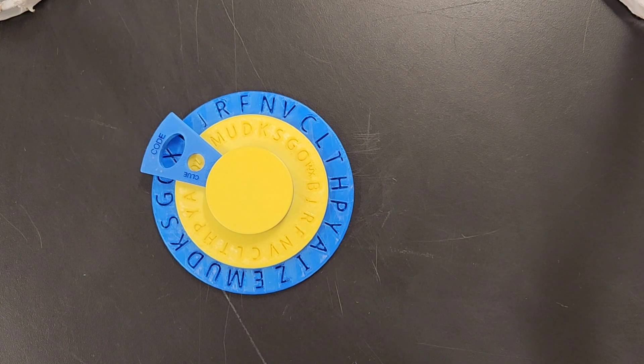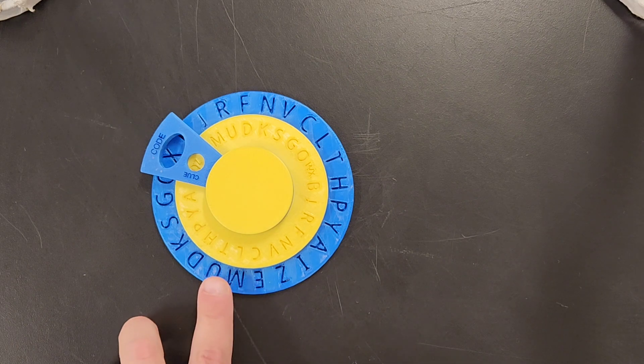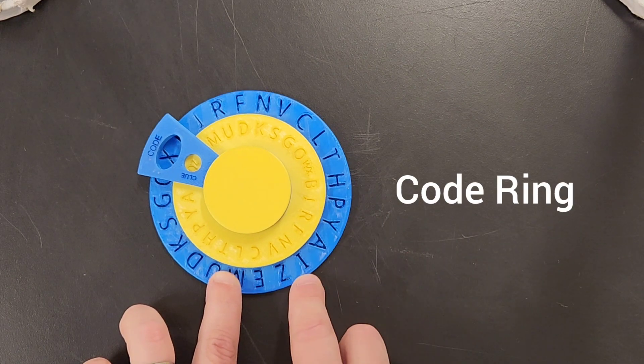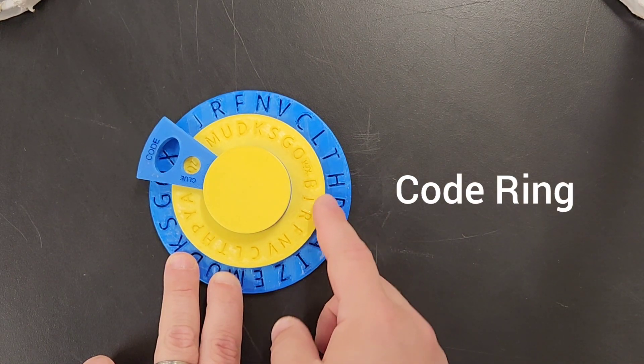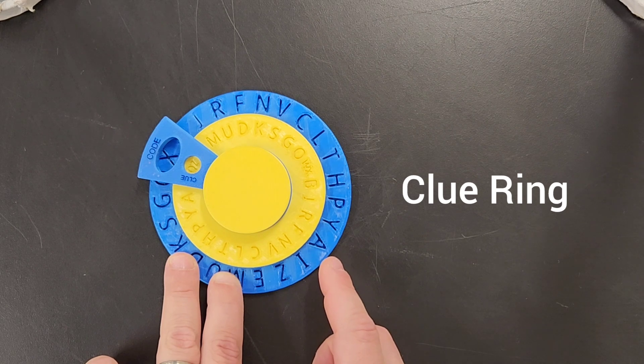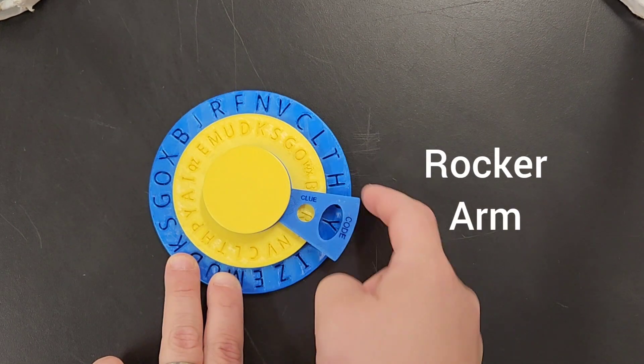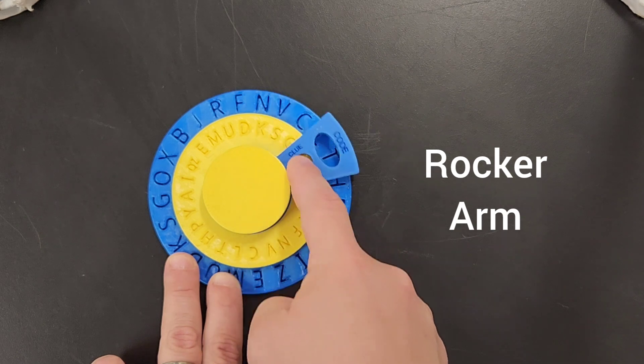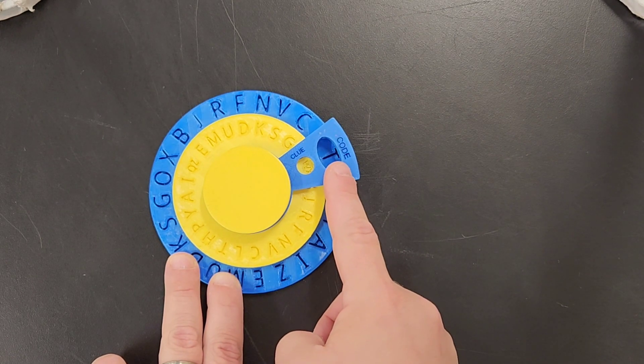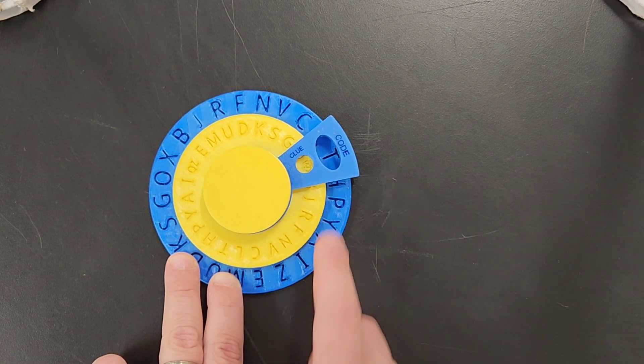So you'll see that there's three main parts. There's the blue code ring, there's the yellow clue ring, and then there's the rocker that has a hole to see one code letter and one clue letter at the same time.